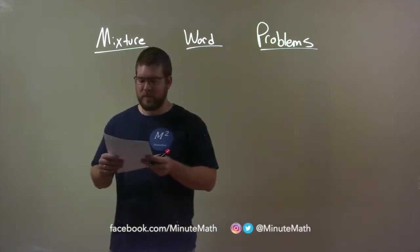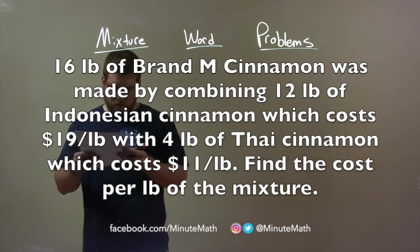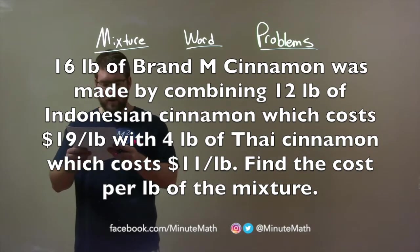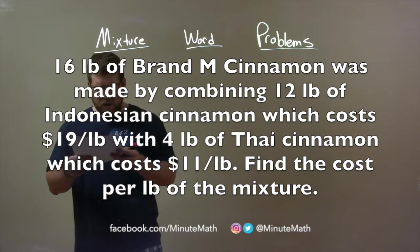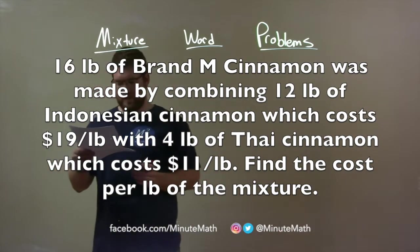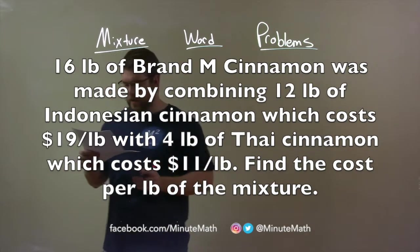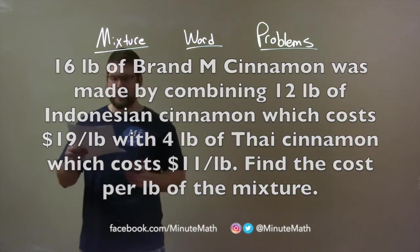And if I was given this problem: 16 pounds of Brand M cinnamon was made by combining 12 pounds of Indonesian cinnamon, which costs $19 per pound, with 4 pounds of Thai cinnamon, which costs $11 per pound. Find the cost per pound of the mixture.